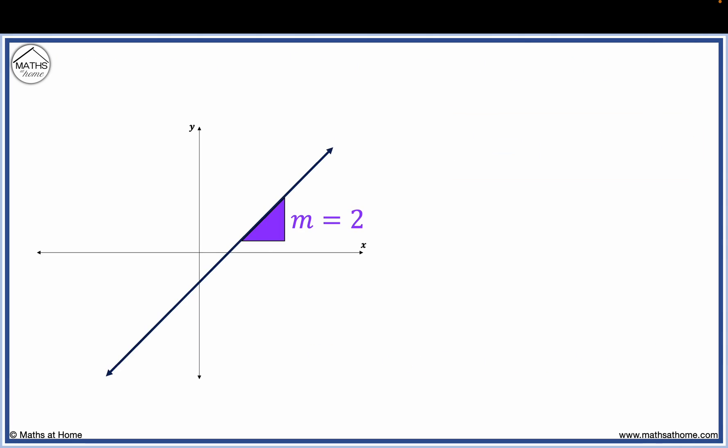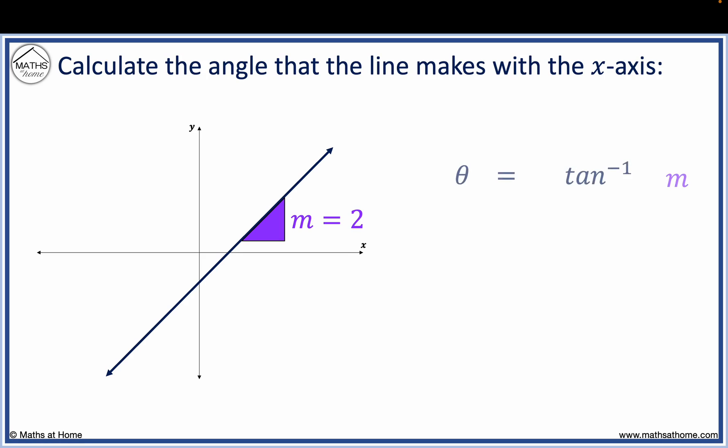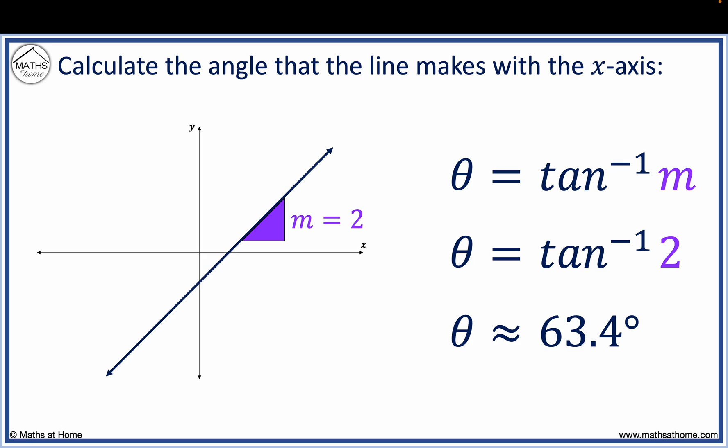For example, calculate the angle that the line makes with the x-axis. We use theta equals inverse tan of m. Here m equals 2. Evaluating inverse tan of 2, we obtain 63.4 degrees.